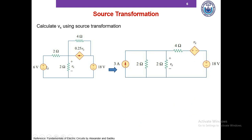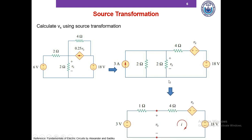I've converted this 6V voltage source and 2 ohm resistor into a current source of 3 ampere in parallel with the 2 ohm resistor. I've also converted this dependent current source into a dependent voltage source. In the next step, I've combined the two 2 ohm resistors in parallel, then taken source transformation again of the 3 ohm resistor and the combined 1 ohm resistor. We end up with just one mesh.